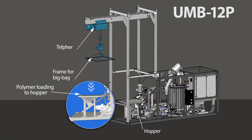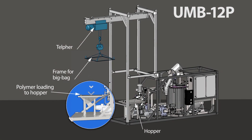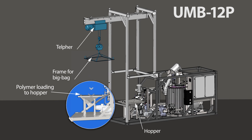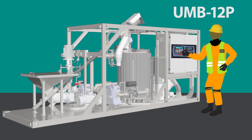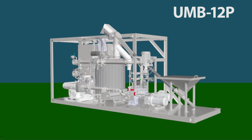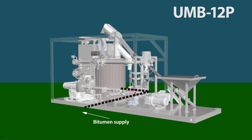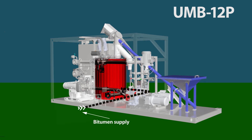The bitumen modification process begins with loading the polymer into a hopper, done by the operator either manually or with a telfer device. After that, the operator sets the percentage of additives in the bitumen on the control panel and starts the unit, which then runs automatically.